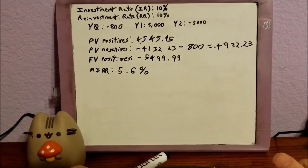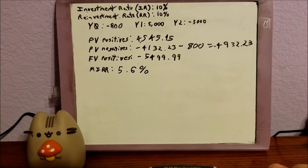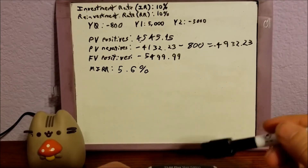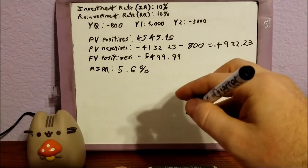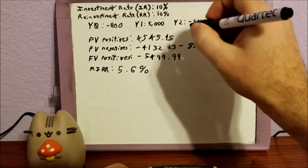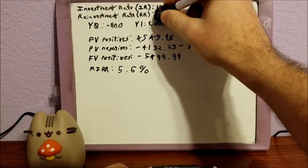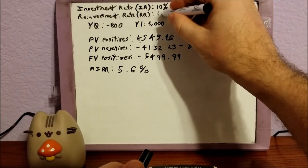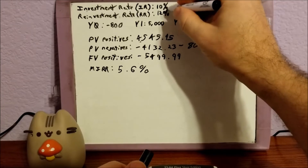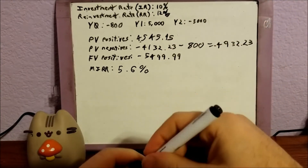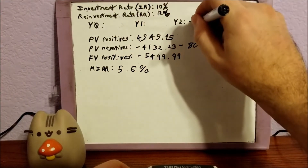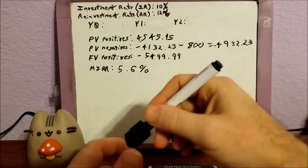It's that simple. Now, what happens if all the cash flows are positive? I'm going to show you that so you know how to deal with it. And to throw in an extra wrinkle, I'm going to change the reinvestment rate to 12%. I'm also going to change year zero, year one, year two, and add a year three.